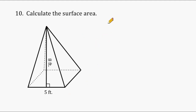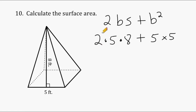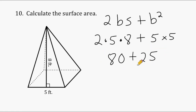We have a square pyramid here, so we use our formula: 2 times base times slant height plus base to the second power. We multiply 2 times our base of 5, then multiply that by our slant height of 8. Then we square our base of 5. So 2 times 5 is 10, and 10 times 8 is 80. Plus 5 squared, which is 25. So 80 is the area of all the triangular surfaces, and 25 is the area of the square base, resulting in a total surface area of 105 square feet.